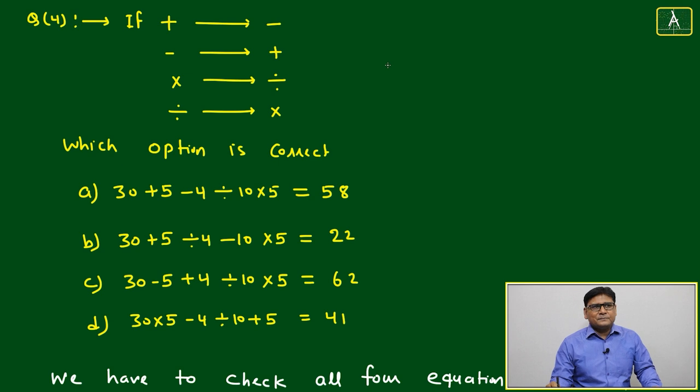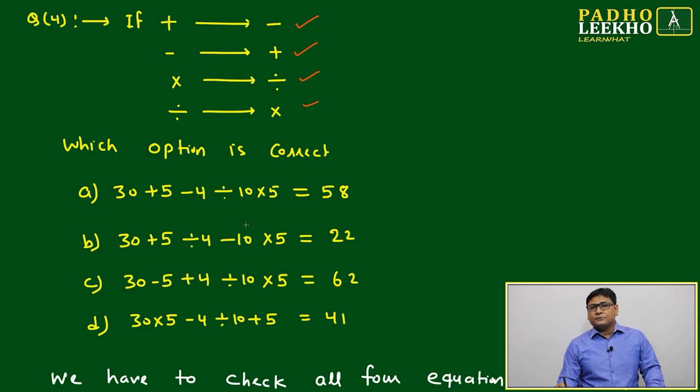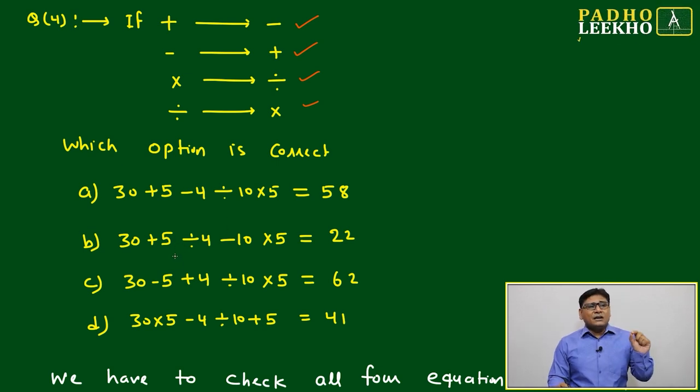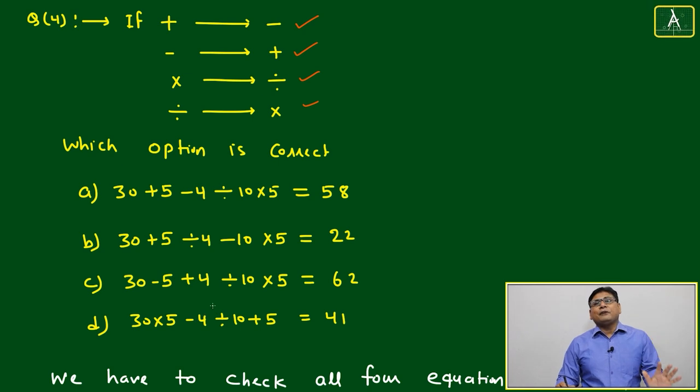Question number four: if addition represents subtraction and subtraction represents addition, which option is correct? This is a type two question. Whatever we discussed in questions one, two, and three, those were type one questions. Type two question means all four choices you have to verify.